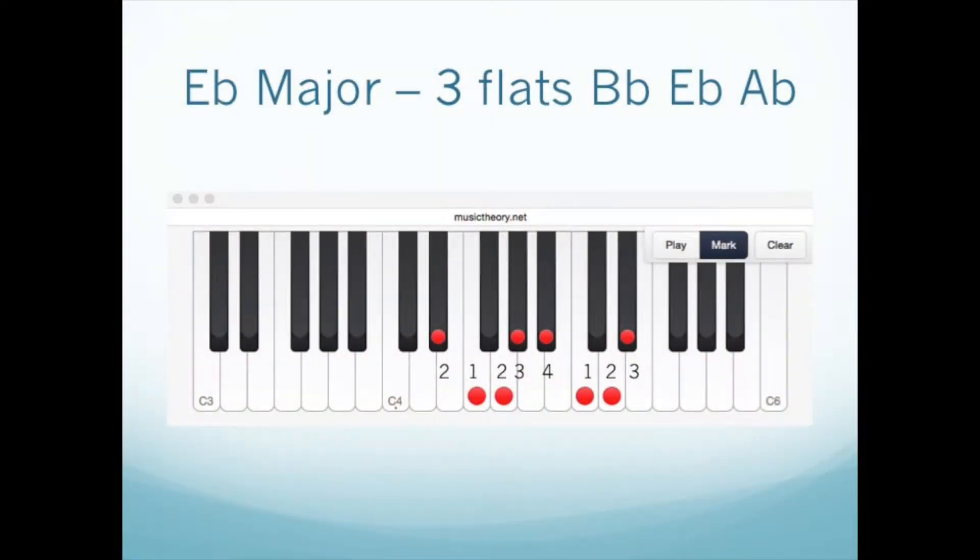The Eb major scale adds the note Ab as a scale tone. You still begin on finger 2. The thumb still lands on the notes F and C. At this point, you may begin to see some of the other similarities of Category 2 scales.